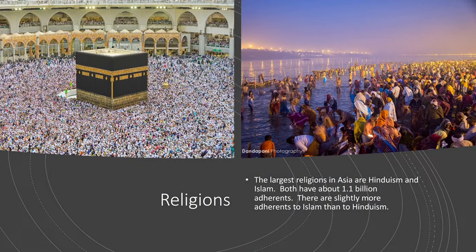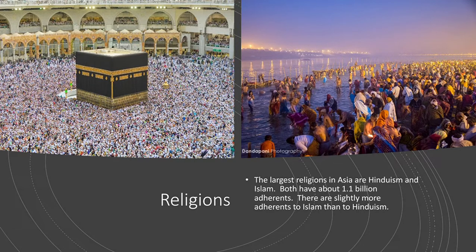In terms of the religions of Asia, the two largest religious groups are very close between Hinduism and Islam — they both have about 1.1 billion followers, or adherents. This first picture is the most sacred site in Islam called the Ka'aba. Every person who follows Islam is supposed to, at some point in their life if they are able, visit this holy site. That is why there are so many people there, because those 1.1 billion believers are obligated by their religion, if they are able, to visit this site.